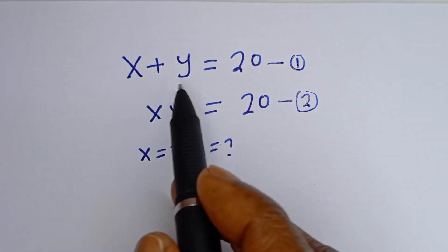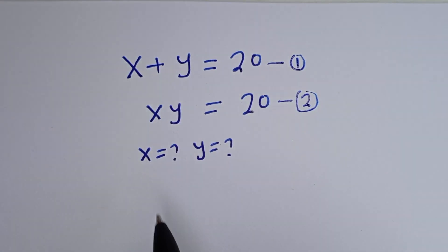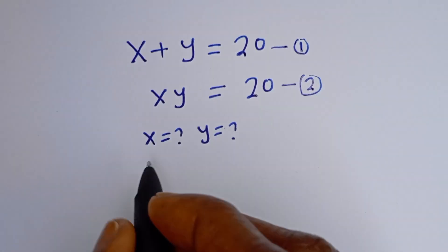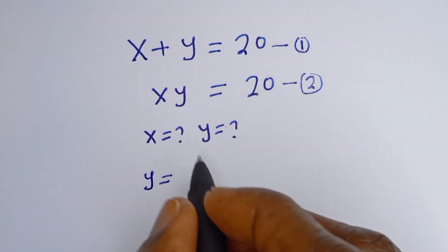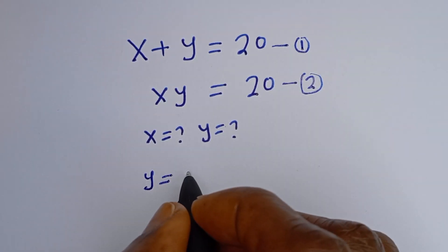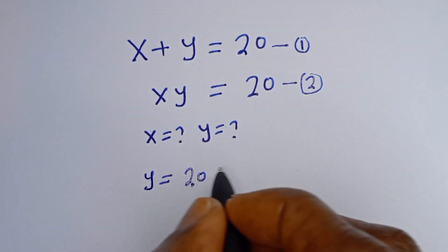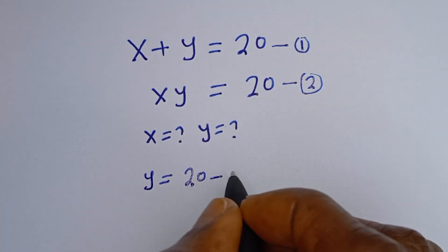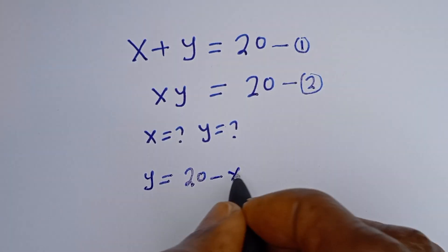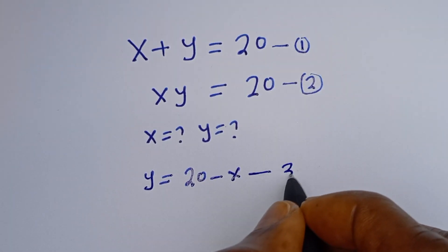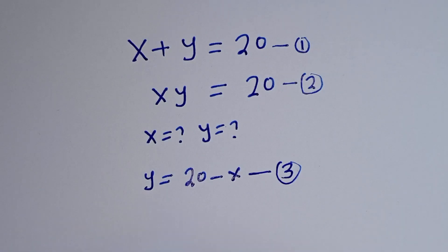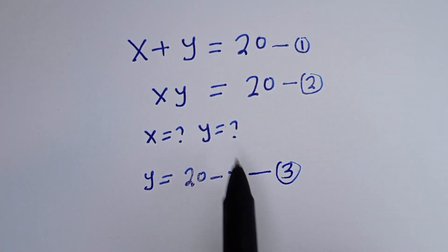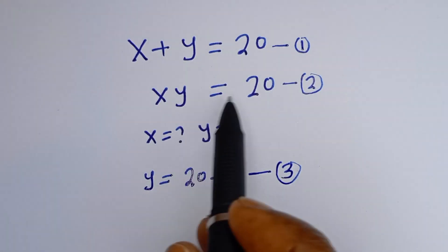From equation 1, we can make Y the subject of the formula. That is, Y is equal to 20 minus S. Let's call this equation 3.